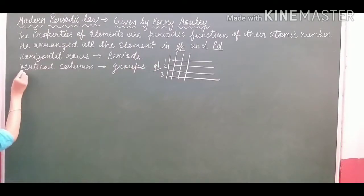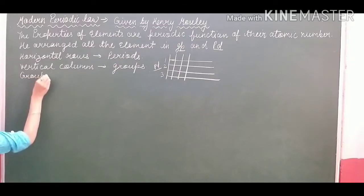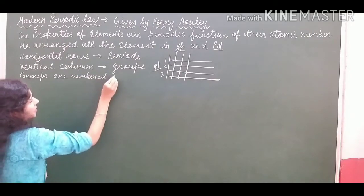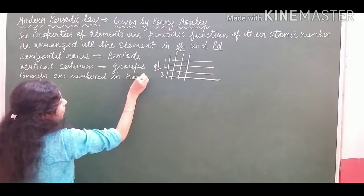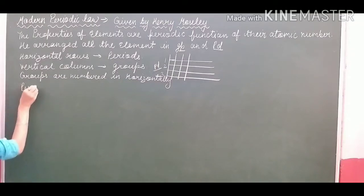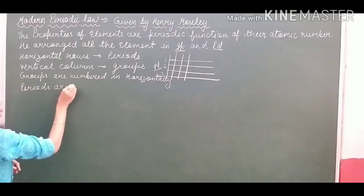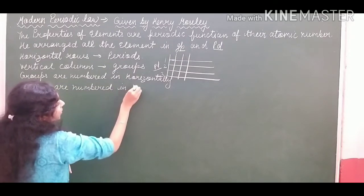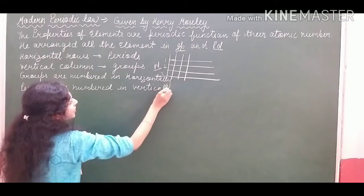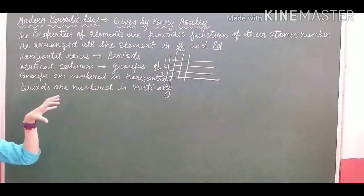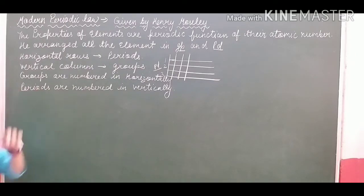So here you have to write: groups are numbered in a horizontal way, but periods are numbered in a vertical way. The detailed explanation of groups we will study later on, but in today's session I have brought the study of periods in detail.